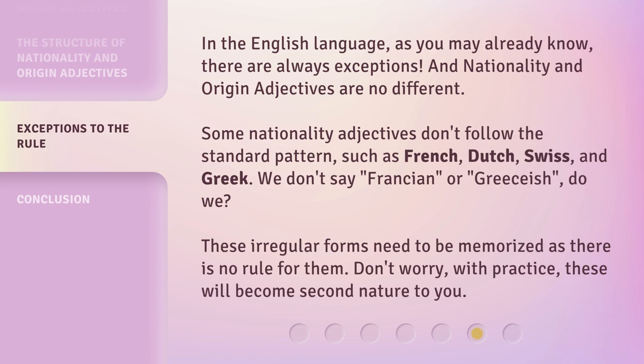In the English language, as you may already know, there are always exceptions — and nationality and origin adjectives are no different. Some nationality adjectives don't follow the standard pattern, such as French, Dutch, Swiss, and Greek. We don't say 'Francian' or 'Greece-ish', do we? These irregular forms need to be memorized as there is no rule for them. Don't worry — with practice, these will become second nature to you.